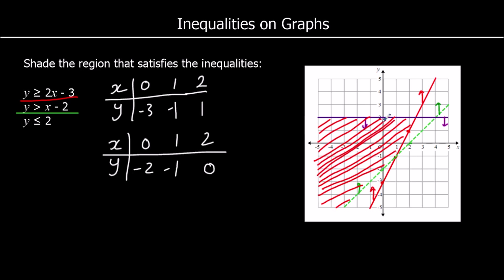We can check we've got the right region by picking a coordinate in it. Picking (0, 0): 0 is bigger than or equal to 0 minus 3, so 0 is bigger than negative 3 — true. 0 is bigger than negative 2 — true. And 0 is less than 2 — true. So this is the correct region.